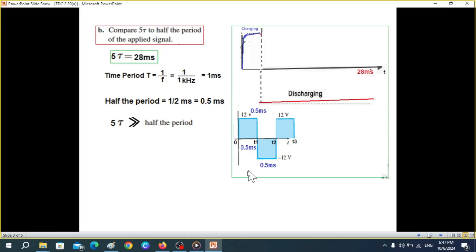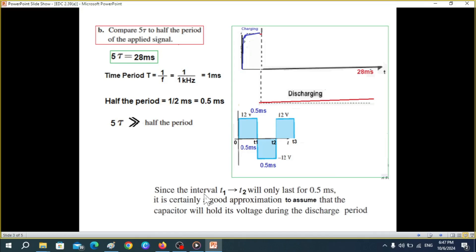Now, what is the impact of this? The impact is that the wave shape will not be distorted. We can assume, let's read this first. So in the interval t1, t2, between this interval will only last for 0.5 milliseconds. It is certainly a good approximation to assume that the capacitor will hold its voltage during the discharge period. That means the capacitor will not discharge or will discharge very minimal. That means the output will be a replica of the shape. Output shape will not get distorted.